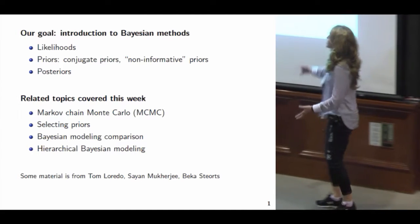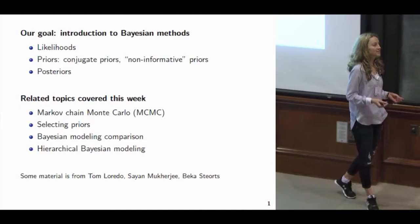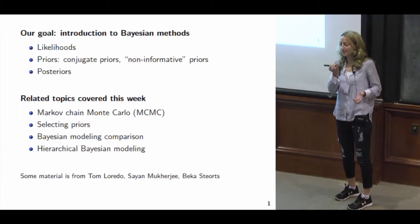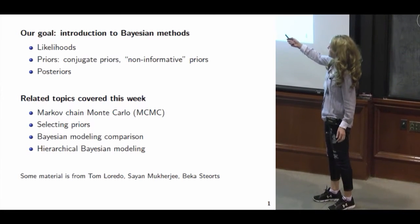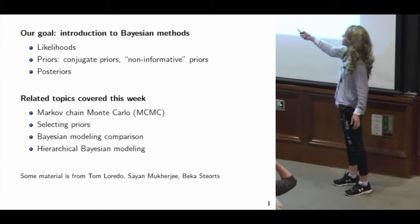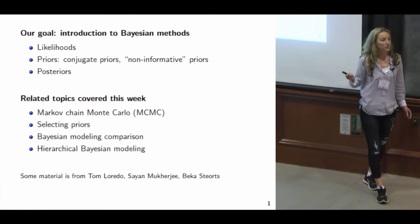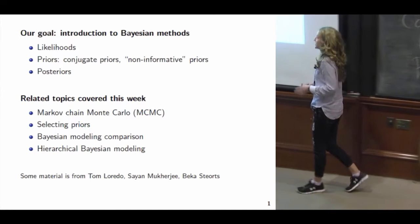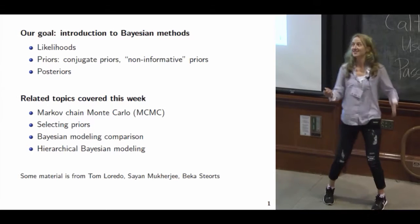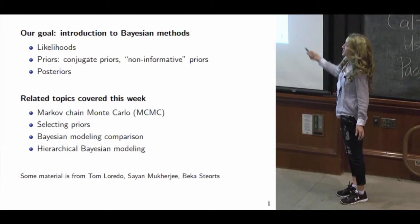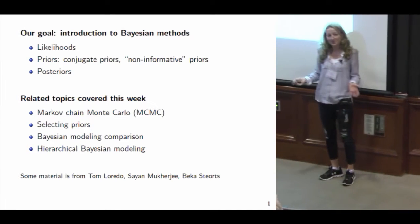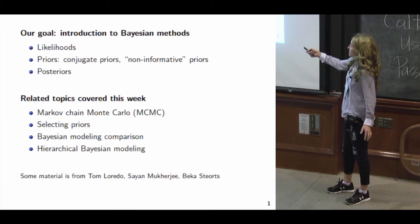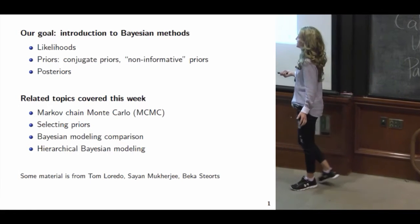My hope is to go through the building blocks of Bayesian methods, culminating in getting a posterior distribution. A posterior distribution is composed of a likelihood function and priors. We're going to discuss what a likelihood is — there's some confusion about what it actually is — and then we'll talk about priors and different ways of specifying them, keeping things rather simple.